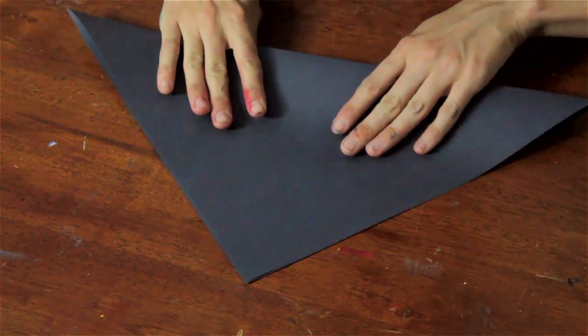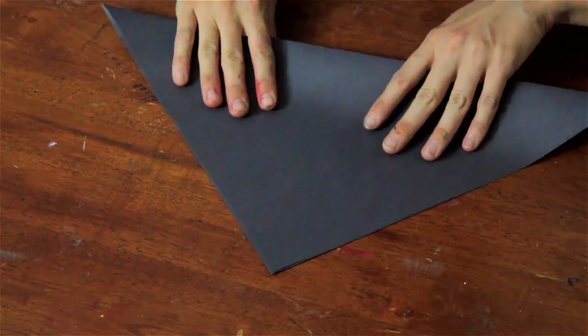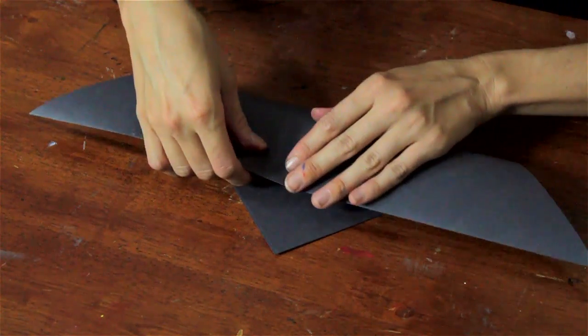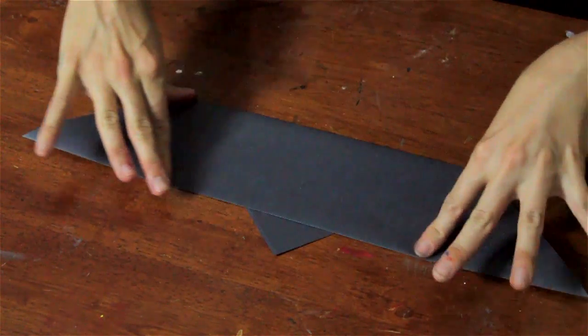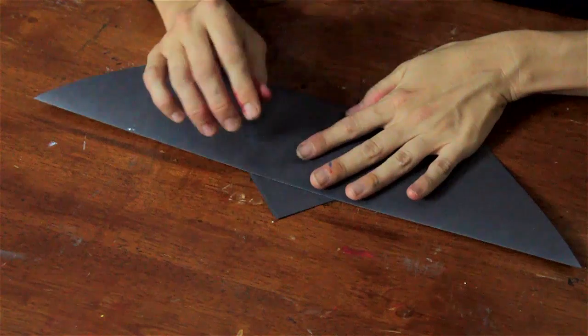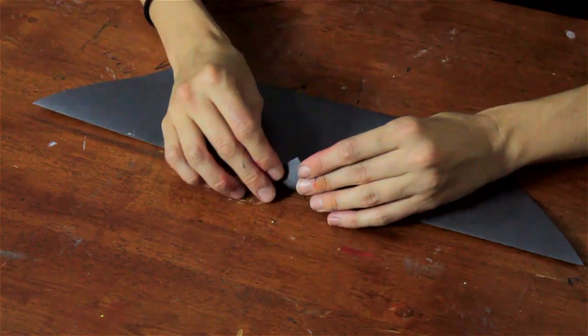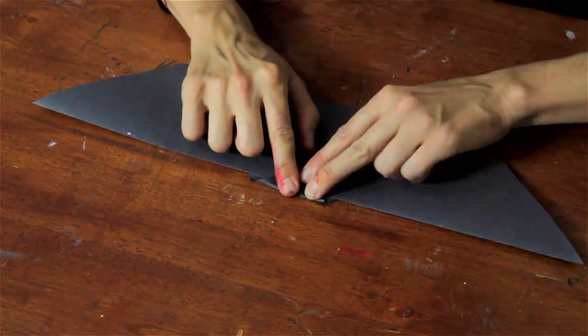First step is to fold it in half to make a big triangle. And then we're going to fold that triangle up from the base. And we're going to go almost to the edge, leaving just a little triangle sticking out. And that triangle is going to get folded down.